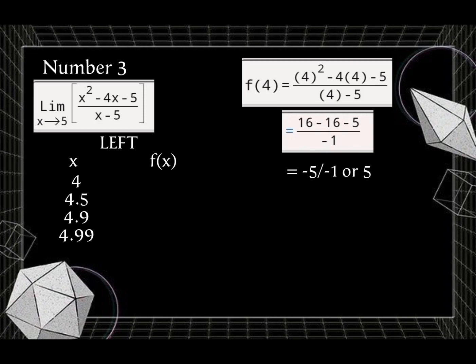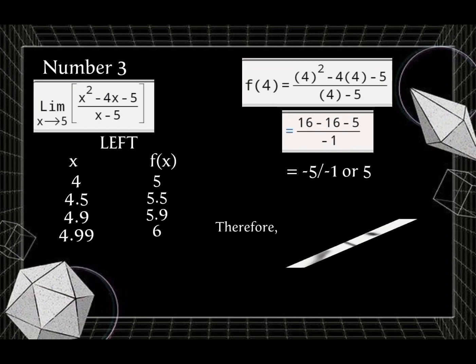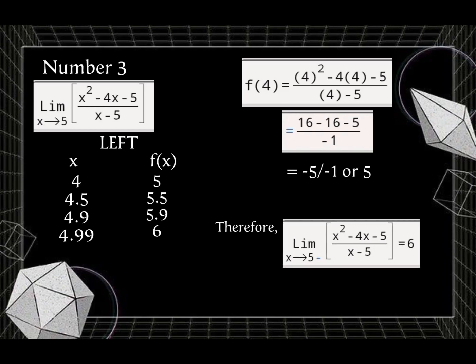We will substitute all the values of x, then we will get 5.5, 5.9, and 6. Therefore, the limit of (x squared minus 4x minus 5) over (x minus 5) as x approaches 5 from the left is 6.